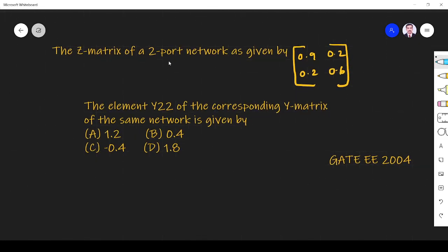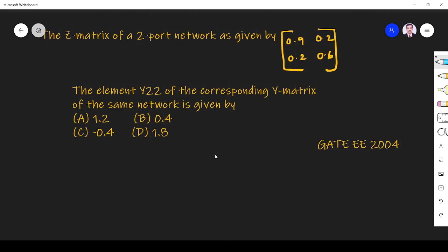The question is the Z-matrix of a two-port network as given by 0.9, 0.2, 0.2, 0.6. The element Y22 of the corresponding Y-matrix of the same network is given by. So they have given Z-matrix, so what we have to find is Y22, that is Y-matrix element we have to find.